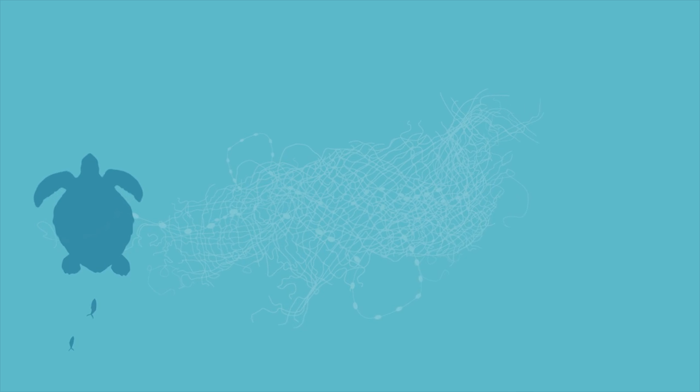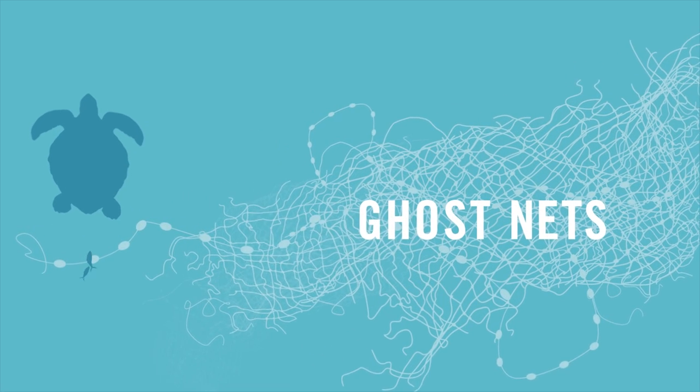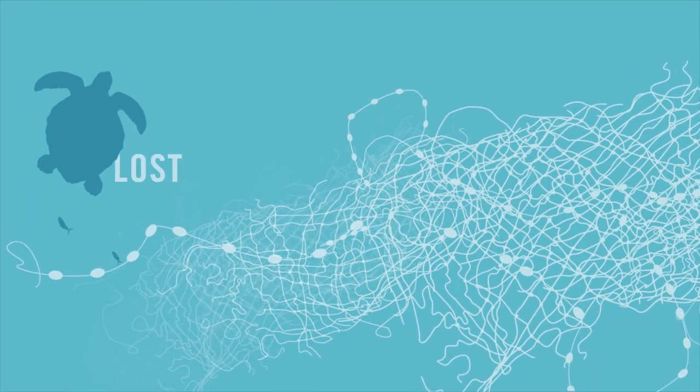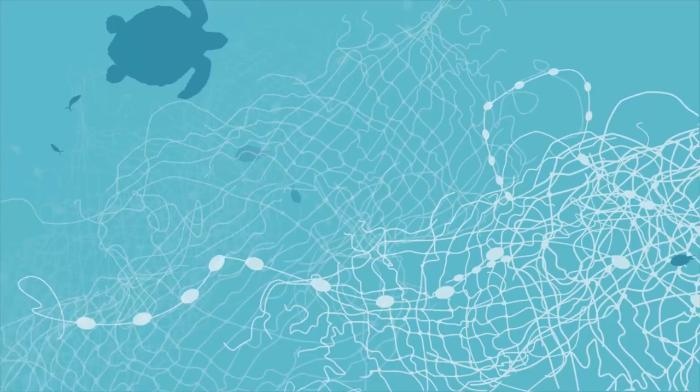The world's oceans are suffering in a number of ways, but one that affects the Maldives is the problem of ghost nets. Ghost nets are fishing nets that have been lost, abandoned, or discarded at sea. These drifting nets trap and kill marine organisms.